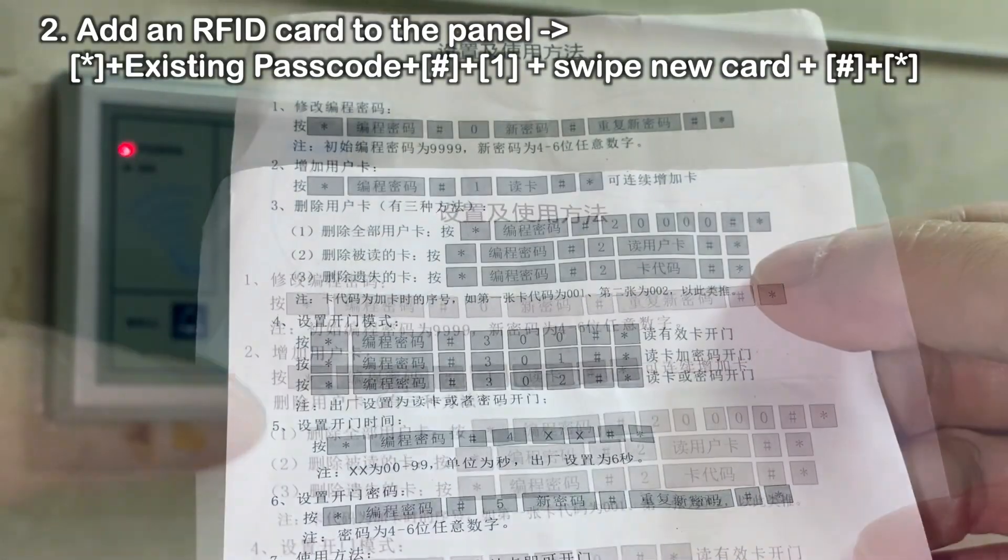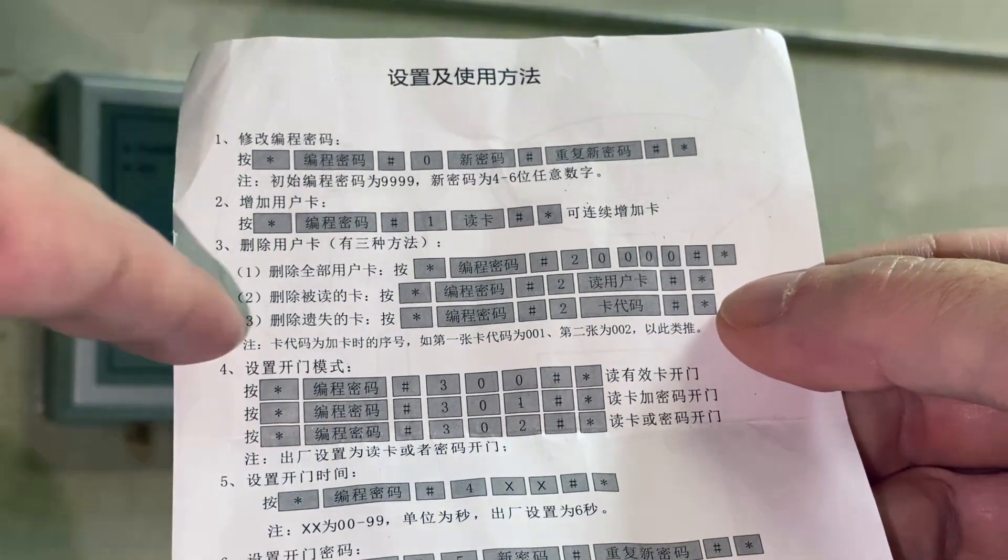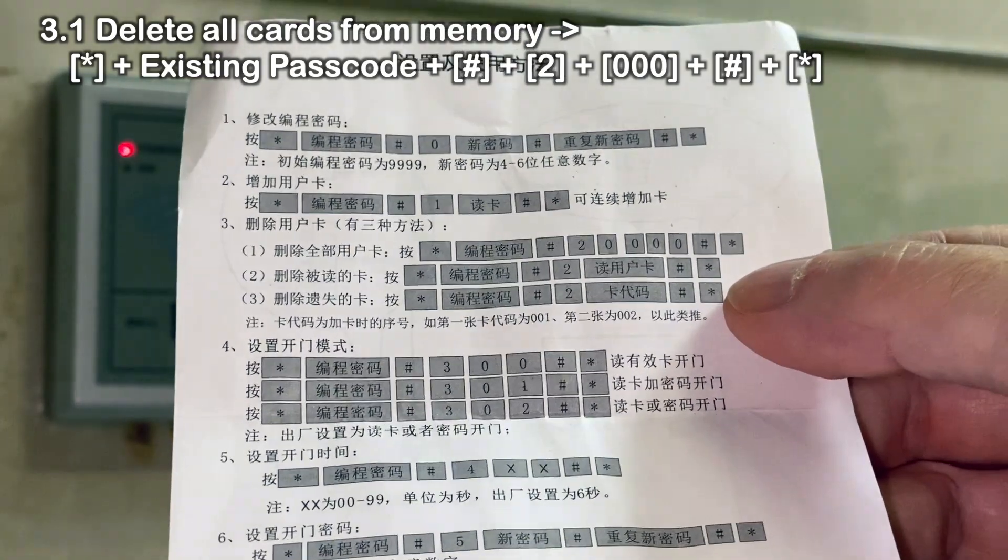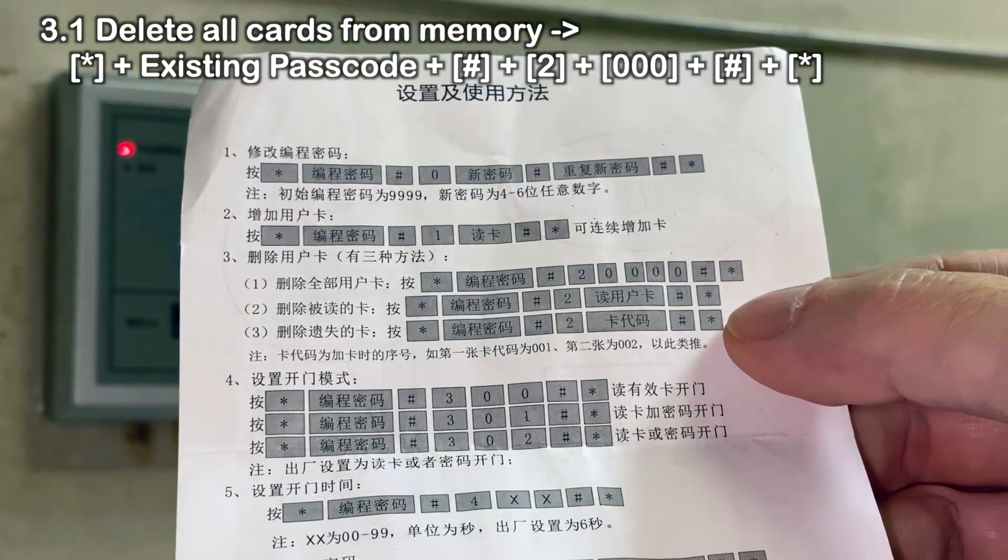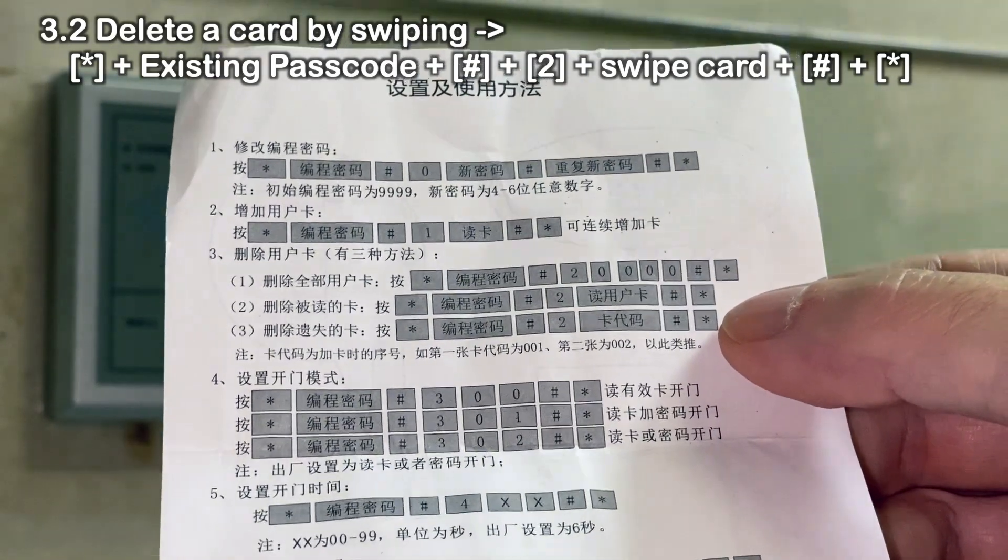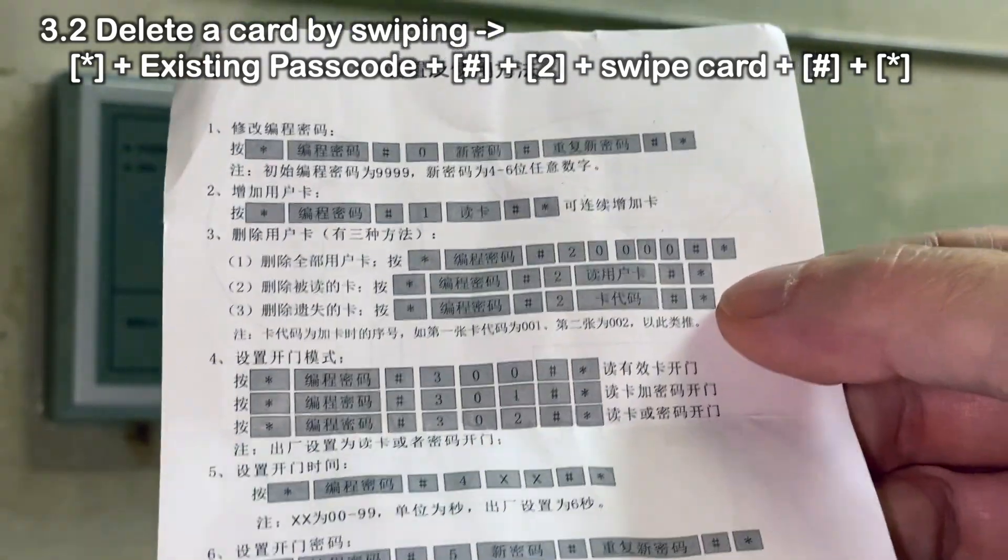Second one is to add a card. That's what we'll show you today. Okay, so in section three, there's the card management and there's three different functions. The first one is to delete all the cards or just erase the whole memory for cards.